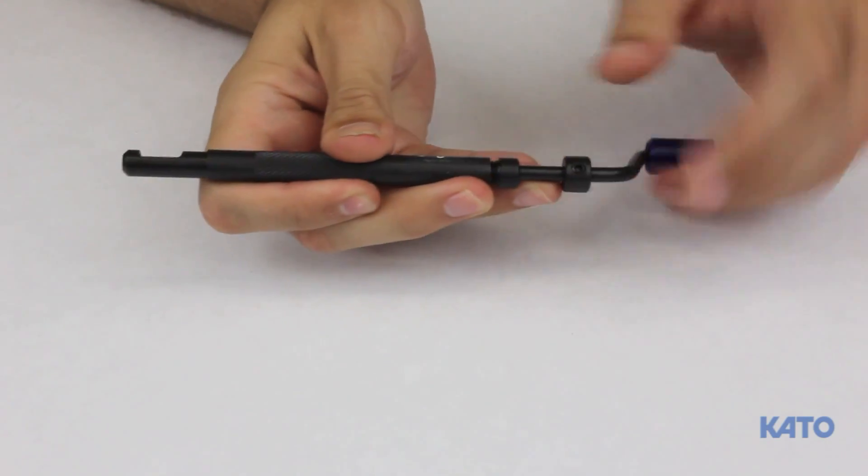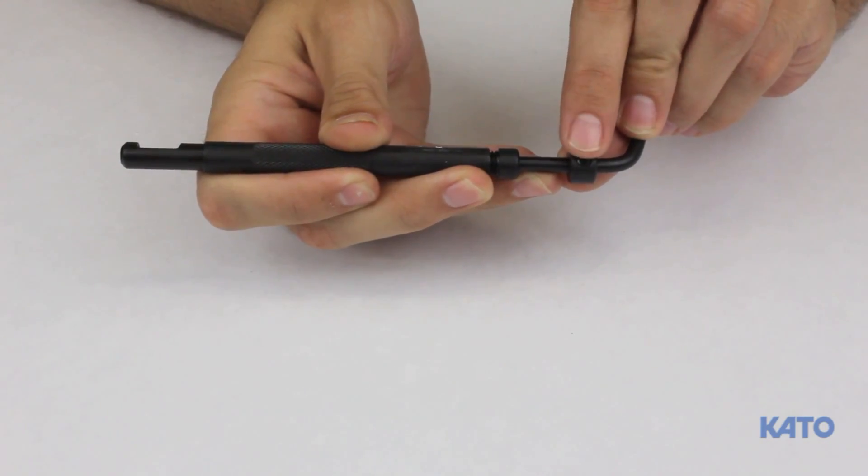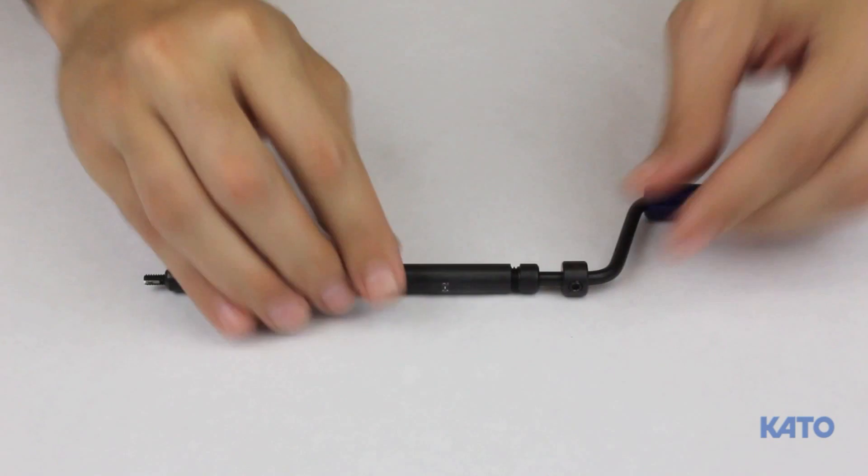This is the depth adjusting collar. Inside is a set screw to secure the collar in place. Use an allen wrench to tighten or loosen the set screw.